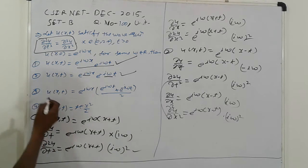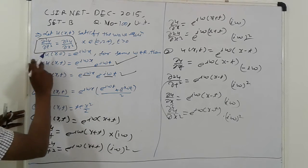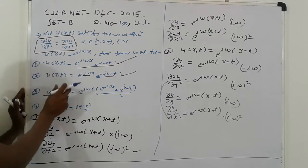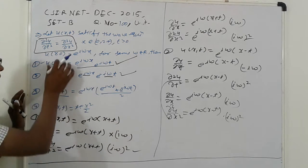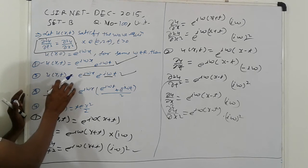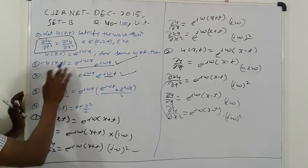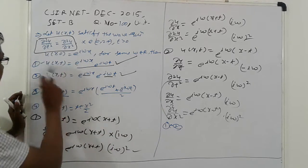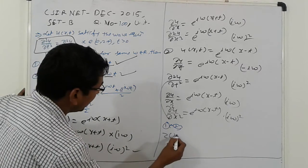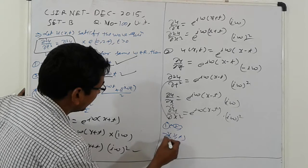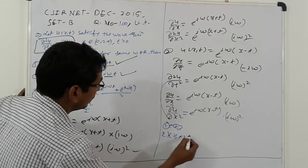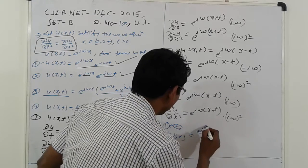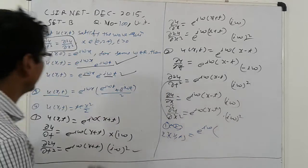Third option: since both options 1 and 2 are solutions, we check their sum. Adding them: 2·u(x,t) equals e raised to iωx times the quantity e raised to iωt plus e raised to minus iωt.